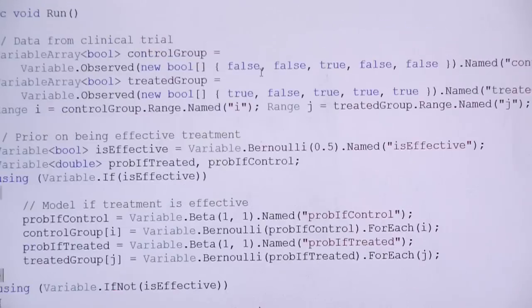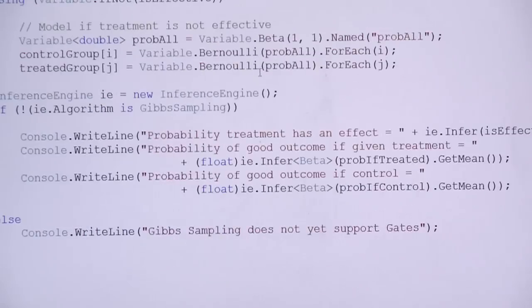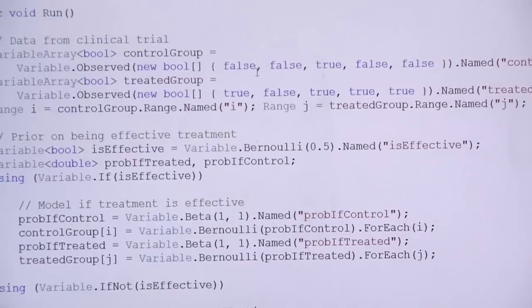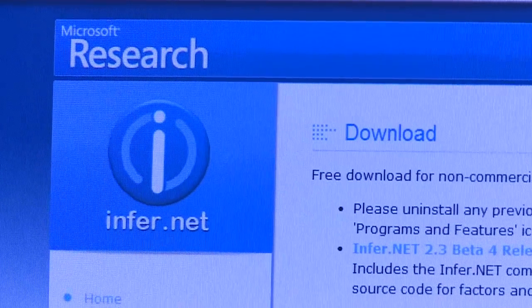Problems where there's lots of uncertain and complex data are getting increasingly common. Here at Microsoft Research we've developed a framework called Infer.net that makes it really easy to write programs to learn from and work with uncertain data. When you combine huge amounts of data with these latest machine learning techniques, we can make some really exciting applications.